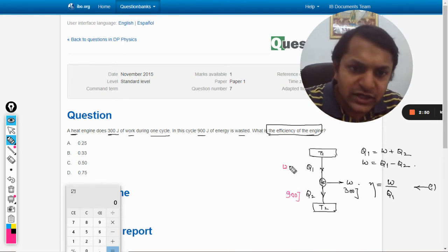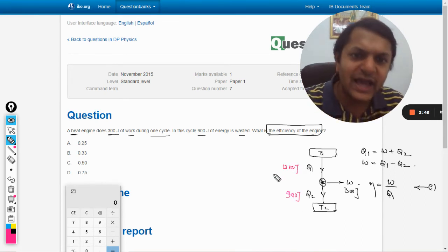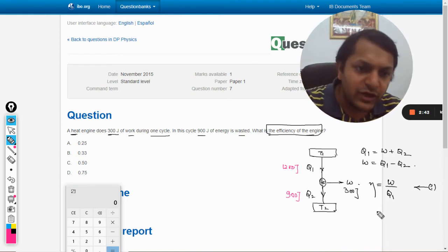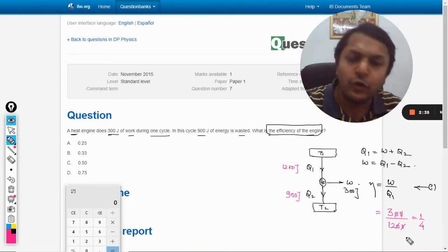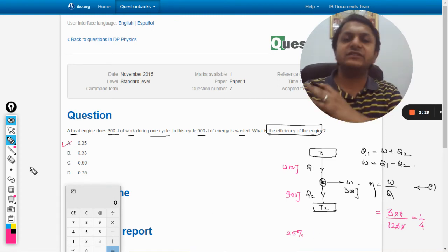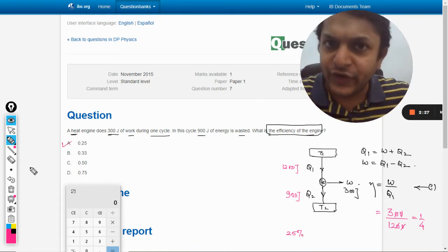So total 1200 joules should have been given to the engine. Now we substitute the values in the efficiency formula: work done is 300 divided by 1200, which comes out to be 1 by 4. In percentage, the efficiency is 25%, or 0.25.